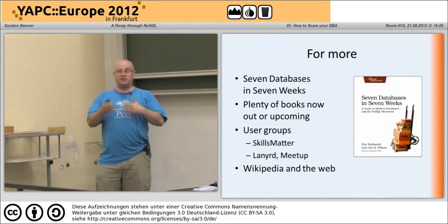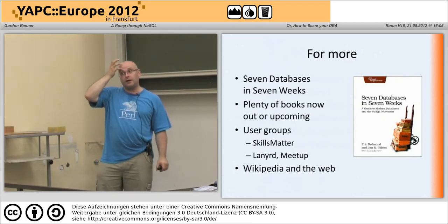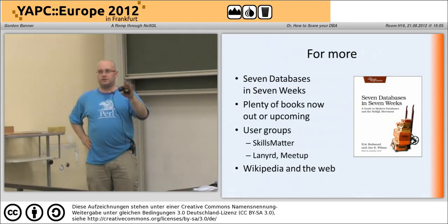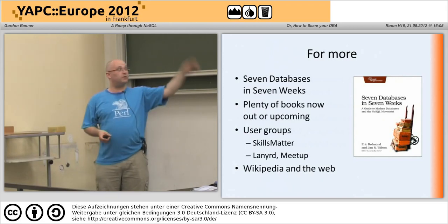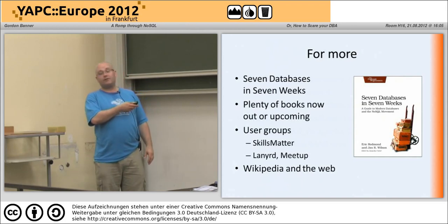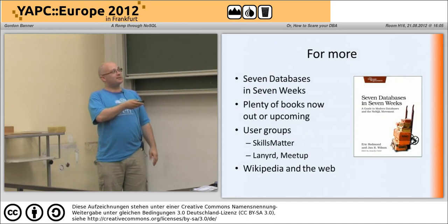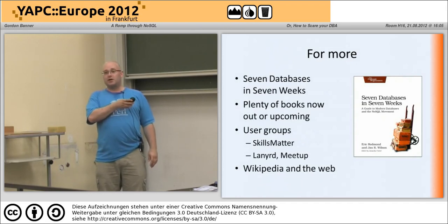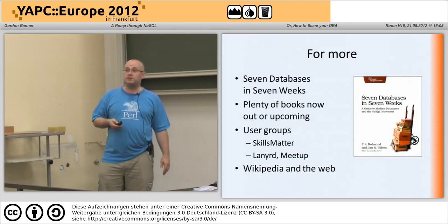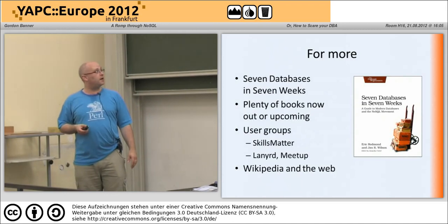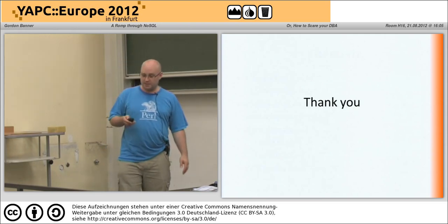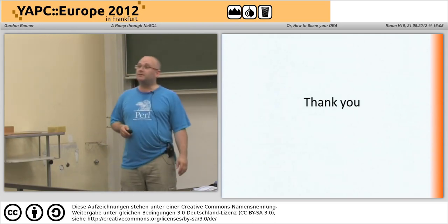There are a lot of books literally in the process of being written. There are some out already on Couch and Mongo. Manning, for example, has quite a lot in their early access program covering just about all of these. Skills Matter is more helpful if you're in London, but they do free evening talks and put the videos online afterwards — you can check out their website and find some interesting talks about various of these things. And Wikipedia, of course. That's it — thank you. Any questions?